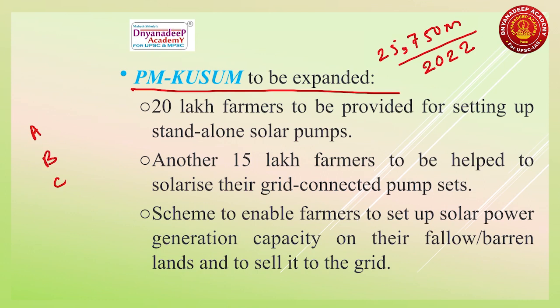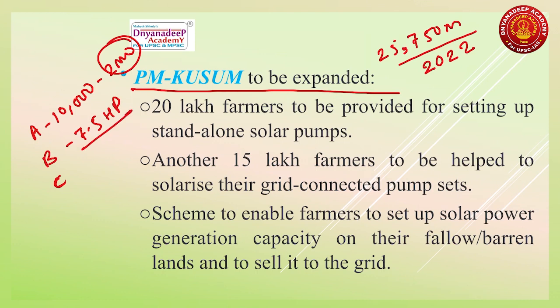PM KUSUM has three components. Component A: 10,000 megawatt of decentralized ground-mounted grid-connected renewable power plants of individual plant size up to 2 megawatt. Component B: installation of 17.50 lakh standalone solar-powered agricultural pumps of individual pump capacity up to 7.5 HP. Component C: solarization of almost 10 lakh grid-connected agricultural pumps of individual pump capacity up to 7.5 HP.